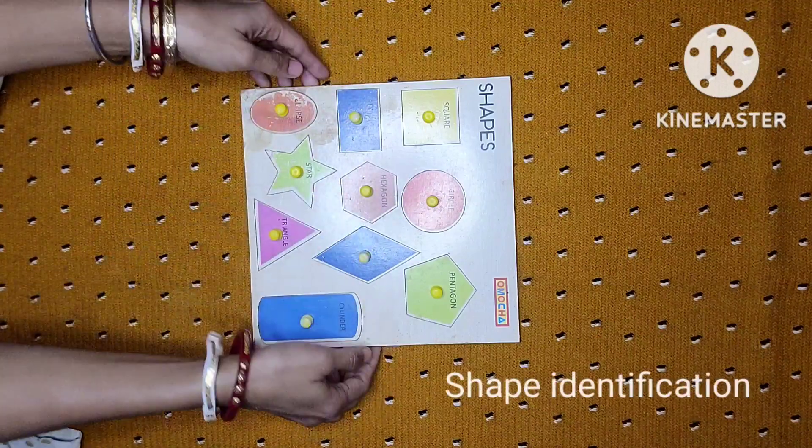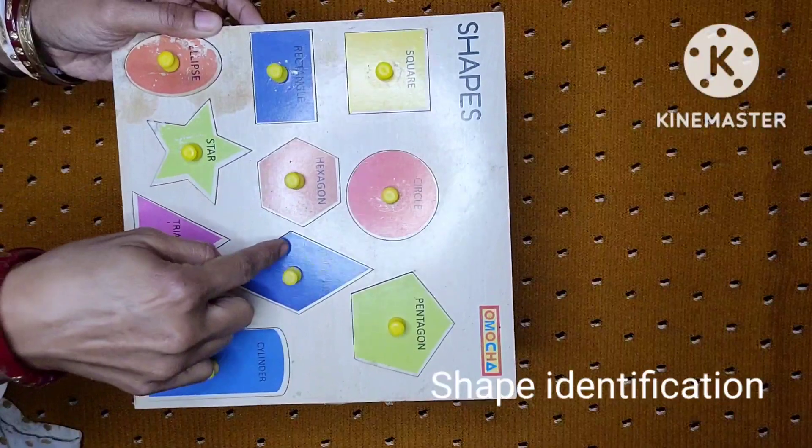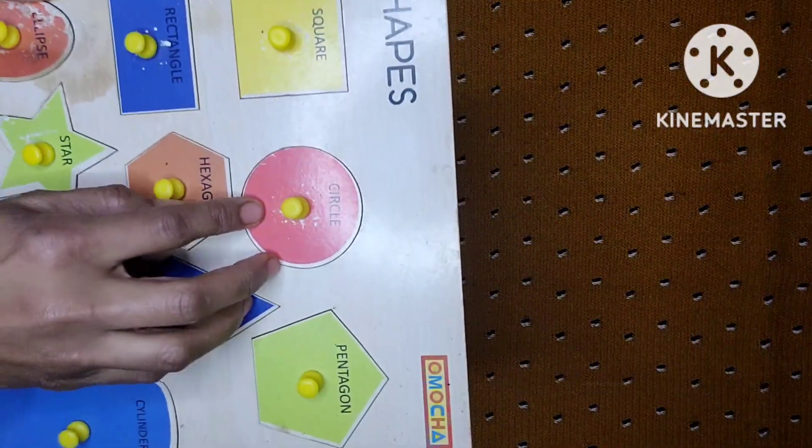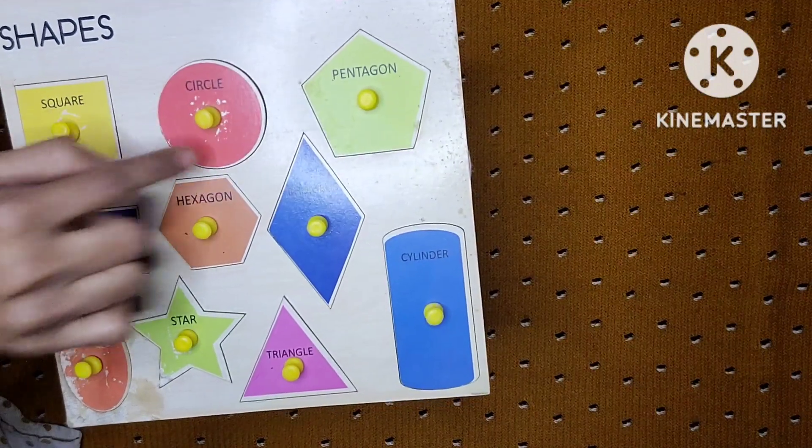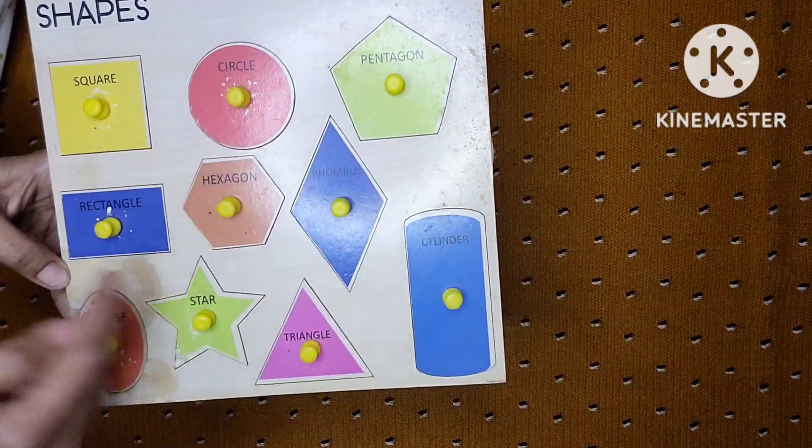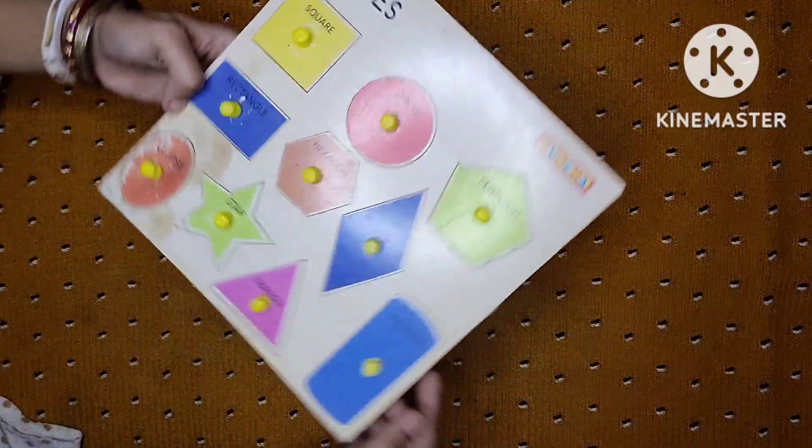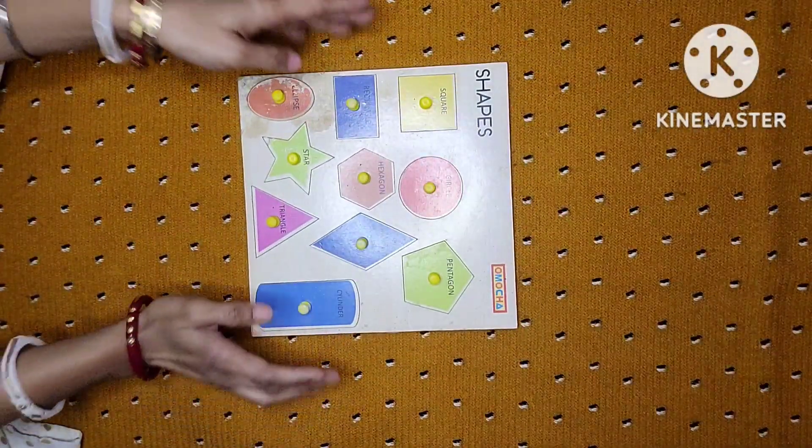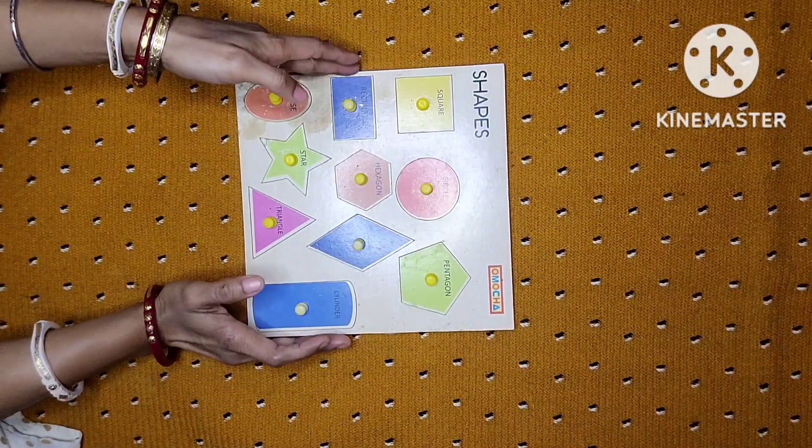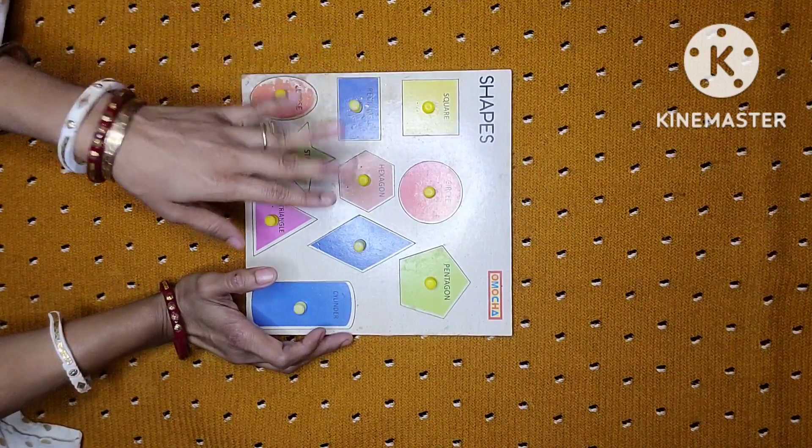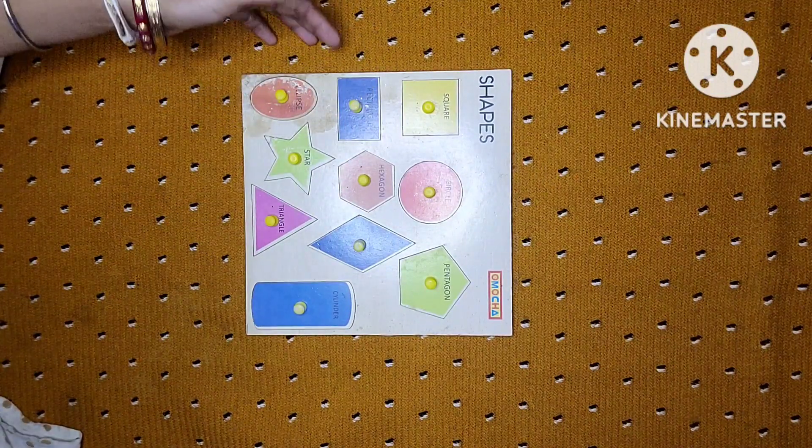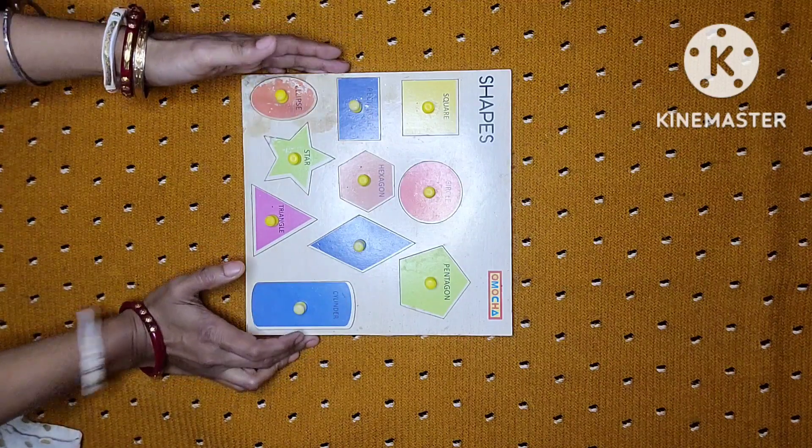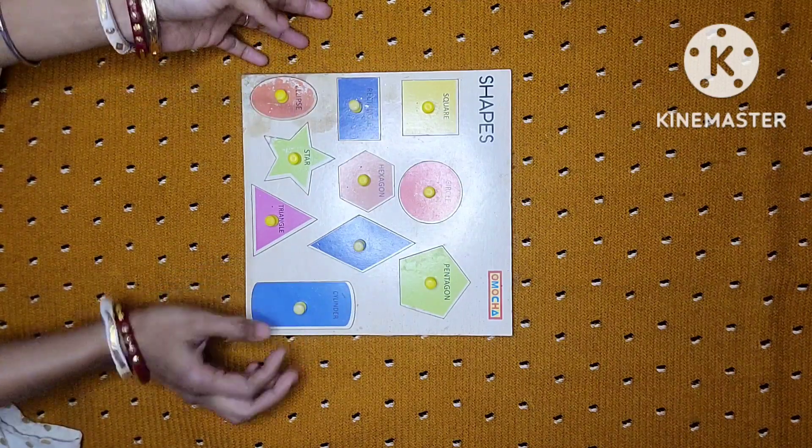Next is shape. See here you can see different shapes are there and I hope that you can see that the names of these different shapes are written over here - square, circle, pentagon, hexagon and different types of shapes are there. So this can give the basic idea of shape to the children in this early age. This is also a very beneficial factor for their brain development.